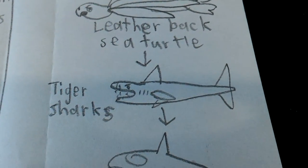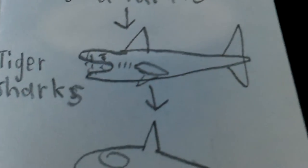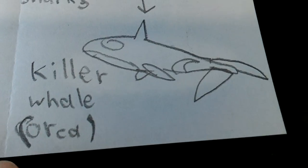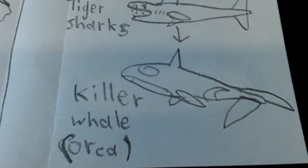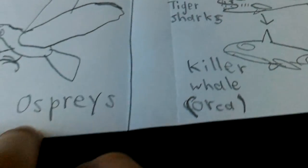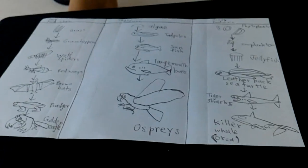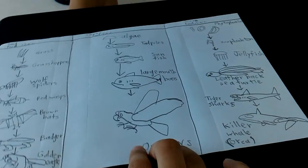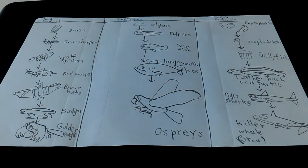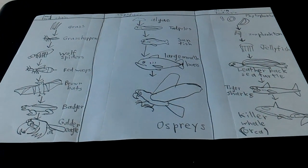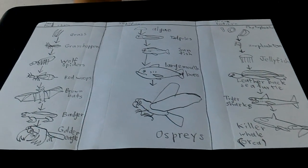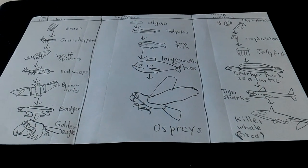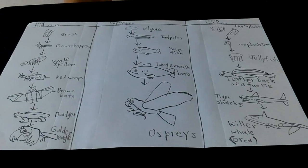Killer whales are top predator — no animal eats them. You may think sharks were top predator, but it's the killer whale who's top predator — wolf of the sea — who can take out a shark. So there you have it guys, a perfectly good food chain for you. If you wanted to know what a food chain is, you looked at the right video. I'll see you guys on my next drawing — see ya, bye!